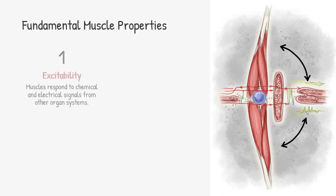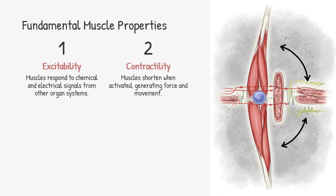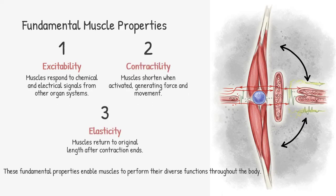Muscles are exciting — literally. They're excitable, meaning they respond to signals. They're contractile — they shorten and pull. And they're elastic, always bouncing back to resting length. These properties allow muscles to be versatile and reliable in action.